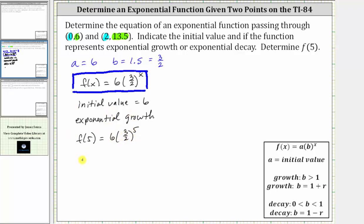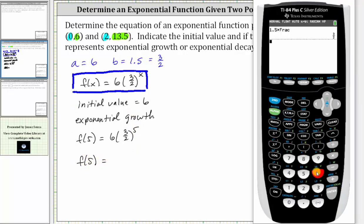And now we'll go back to the calculator. We have 6, and then times 3/2, or 3 divided by 2, raised to the power of 5, enter. Let's convert this to a fraction by pressing MATH, ENTER, ENTER, which gives us 729/16.